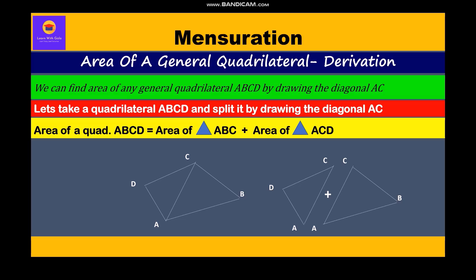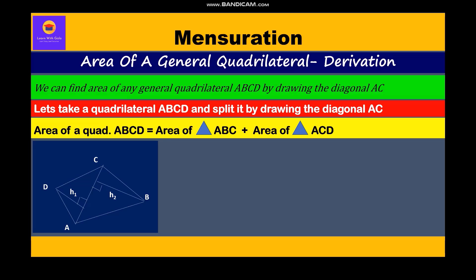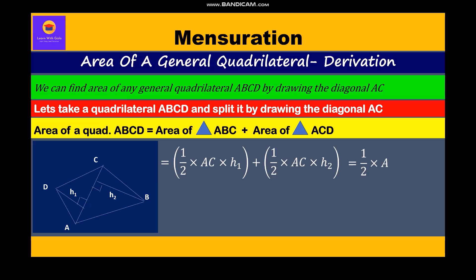This is what is shown in the given figure. Now, we know that the area of a triangle is half into base into height. Accordingly, we will write half into AC into H1 for the first triangle, plus half into AC into H2 for the second triangle. We shall take half into AC as common and write half into AC in bracket H1 plus H2.